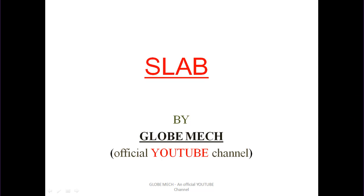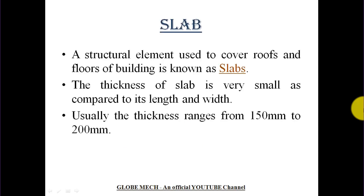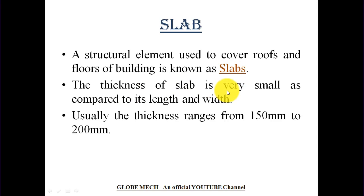Welcome students. Here we discuss about slabs. A slab is a structural element used to cover roofs and floors of a building. The thickness of a slab is very small compared to its length and width, and also small compared to beams and other structural members. Usually the thickness of a slab ranges from 150 mm to 200 mm.